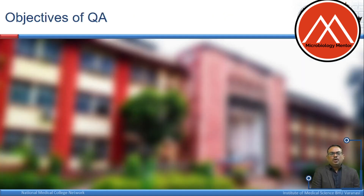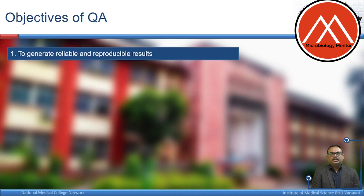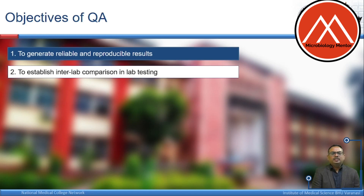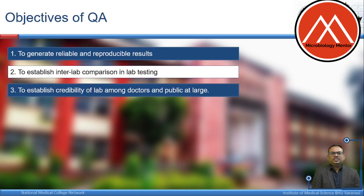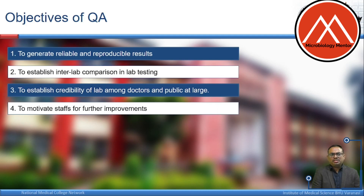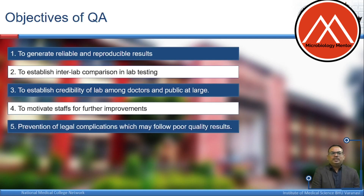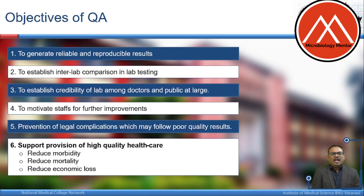The objectives of quality assurance include: to generate reliable and reproducible results, to establish inter-laboratory comparison in lab testing, to establish credibility of the lab among doctors and the public, to motivate staff for further improvement, prevention of legal complications which may follow poor quality results, and to support provision of high quality healthcare by reducing morbidity, mortality, and economic loss.